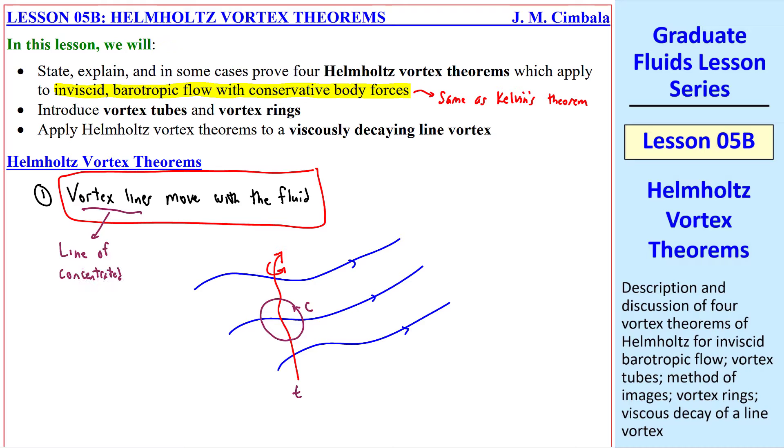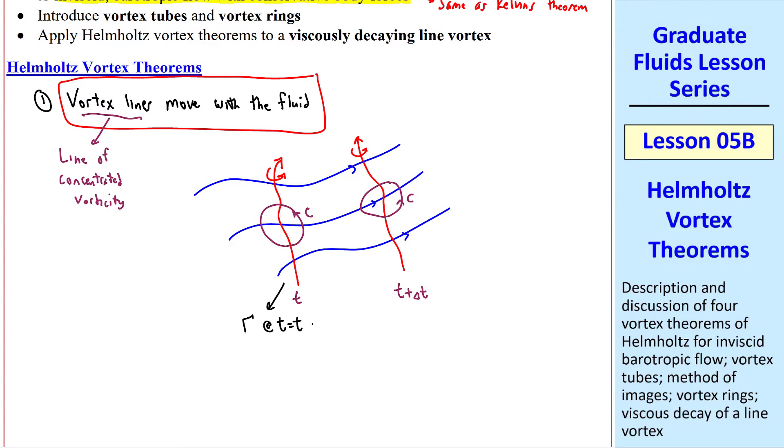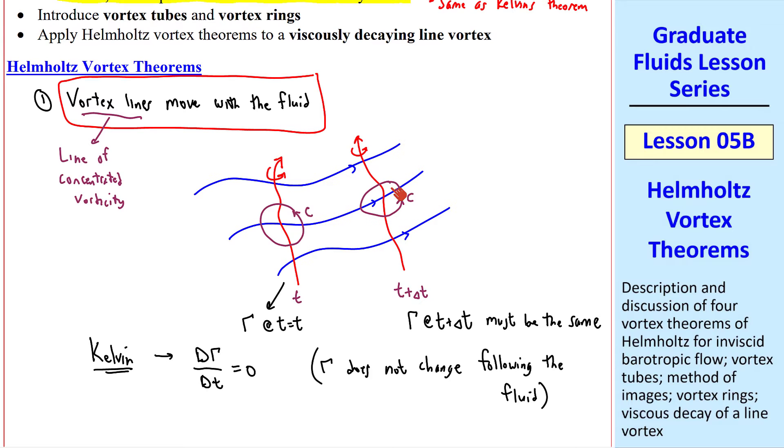By the way, a vortex line is a line of concentrated vorticity. Well, as this vortex moves along, it will move with the flow, so that at some later time, t plus delta t, it will have moved here. Again, if we take a contour around that vortex line, it must have the same circulation. Kelvin's Theorem tells us that d gamma dt equals zero. In other words, gamma does not change following the fluid. So gamma at t plus delta t must be the same, since we are letting this closed contour also move with the fluid.